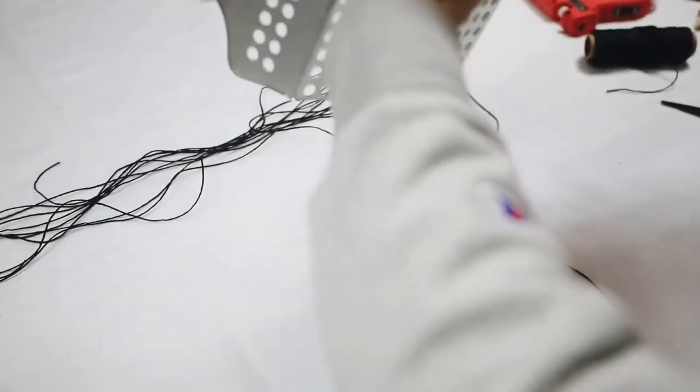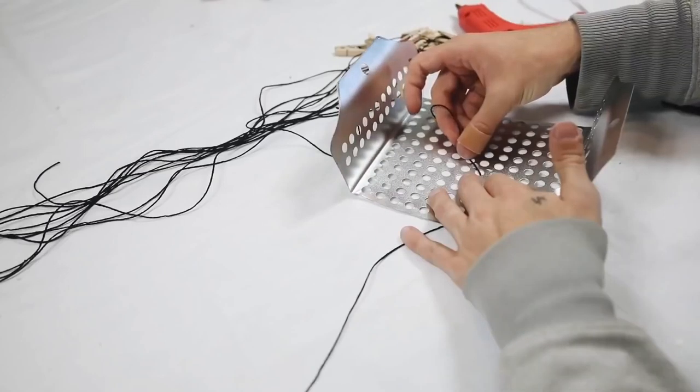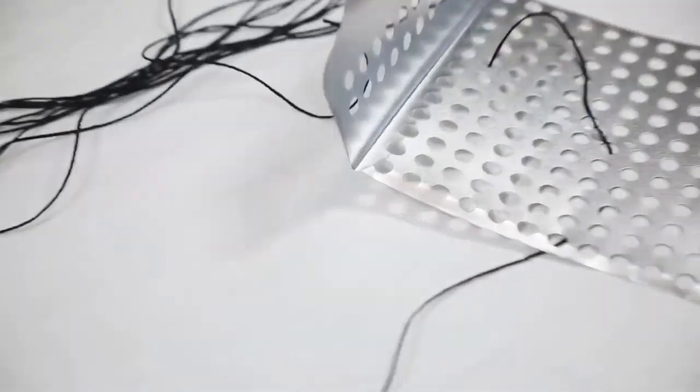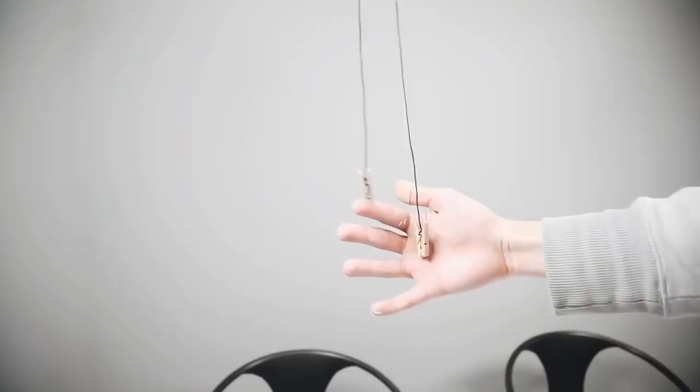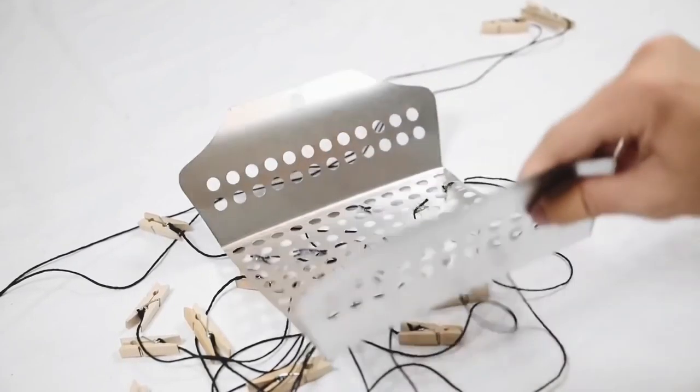So here comes the fun part. We're going to be sticking our strands up through the holes that are in the wok there, and I'm going to glue them down and then cut off any excess tails. So we basically have a ton of these clothespins that are going to be hanging from that metal section there.